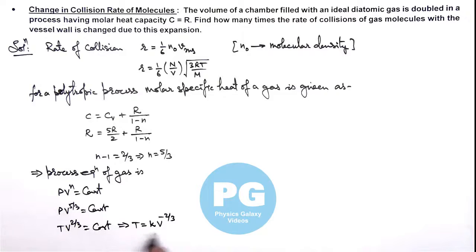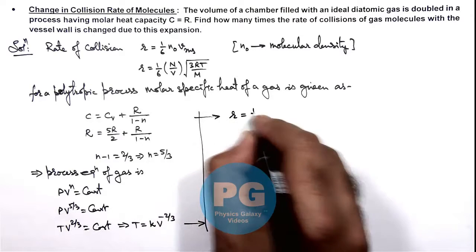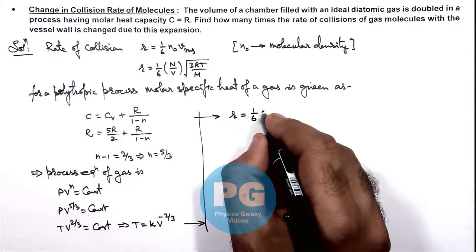So as we have got the relation in t and v, here we can continue as the rate of collision is 1 by 6 times